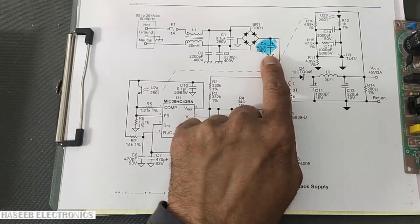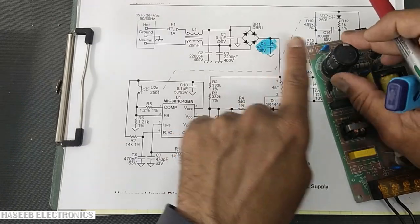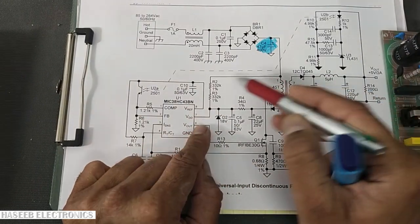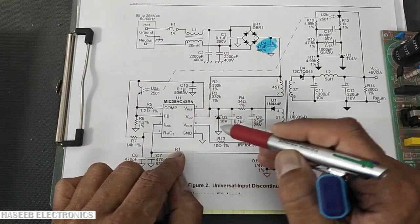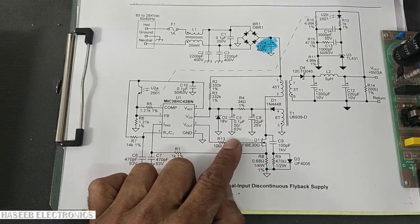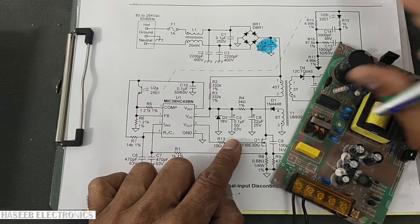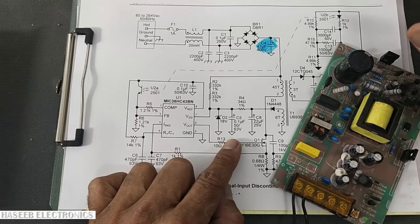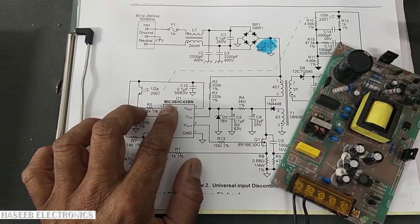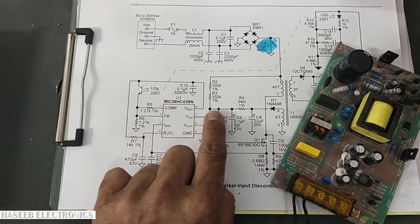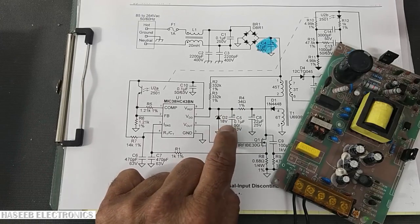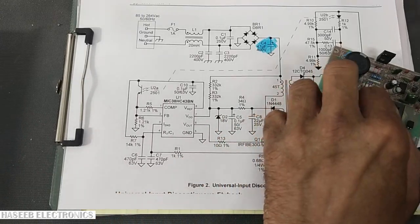If this electrolytic capacitor is bad, the power supply can fluctuate. The second thing, this power supply has a startup circuit. It uses a VCC capacitor which most of the ICs are using. VCC capacitor is used in the VCC pin, VDD pin, in 3844, 2843, 3844, 3845 series pin number 7, that is VCC pin.